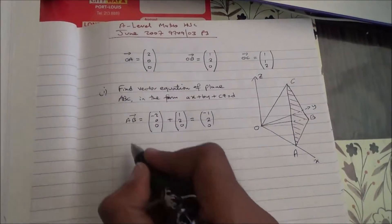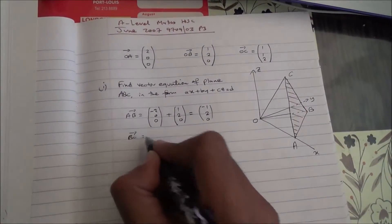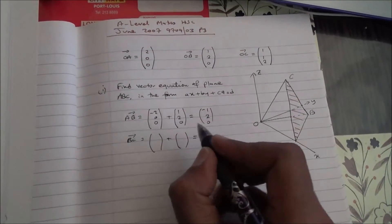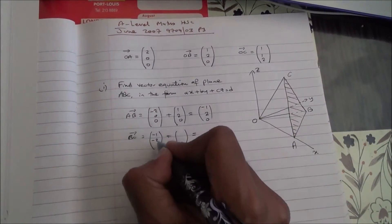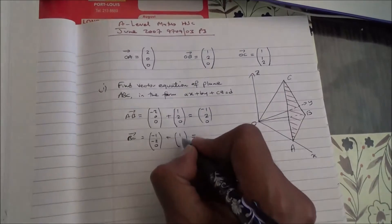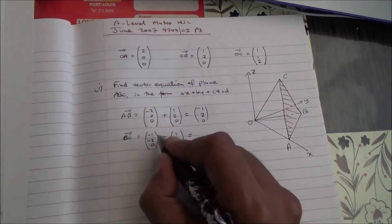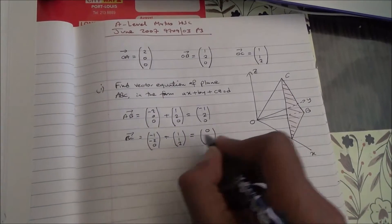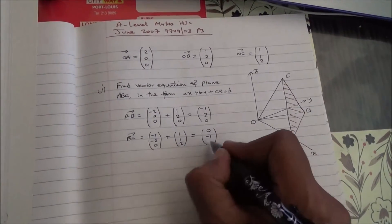Now, that done, we're going to have to find vector BC. Okay, so vector BC is basically vector BO, which is then minus 1, minus 2, 0, plus OC, 1, 1, 2. So 1 plus minus 1 is 0, you've got minus 2 plus 1 is minus 1, 0 plus 2 is 2.